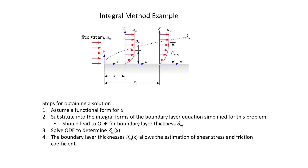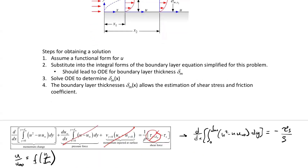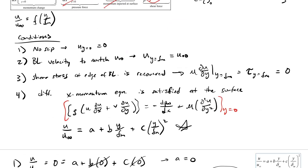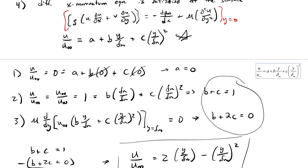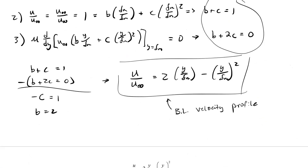So this is where we were. We assumed our functional form, threw away some terms that we didn't think we needed for this really simple problem, and came up with our boundary layer velocity profile right here. The function is something we gave it, and then we're imposing conditions to get to this.